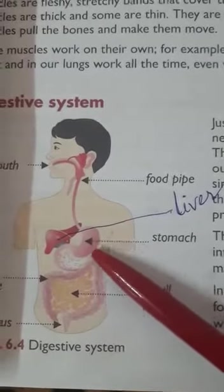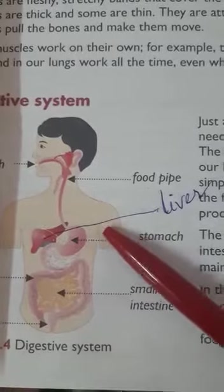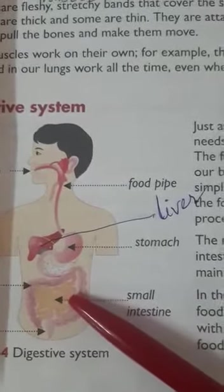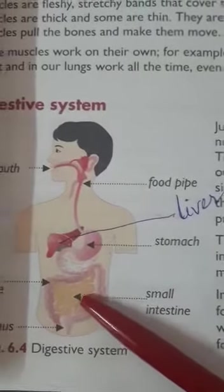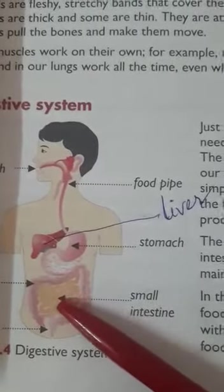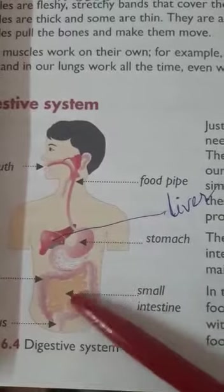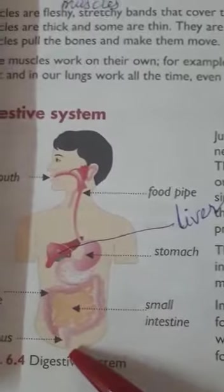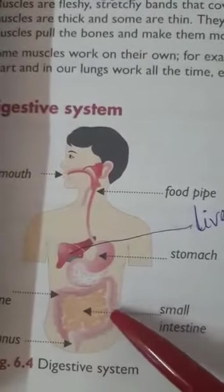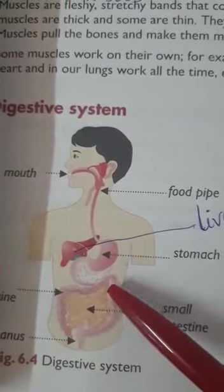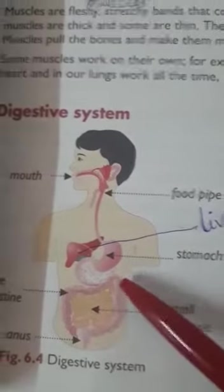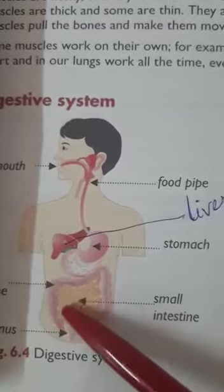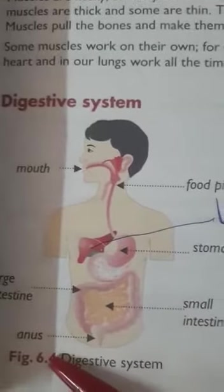The food becomes soft and broken down into very small pieces in the stomach. This broken-down substance goes to the small intestine, where nutrients are absorbed. The waste food left in the small intestine goes to the large intestine. In the large intestine, water and excess salts are absorbed from the undigested food, and the waste material is expelled through the anus.